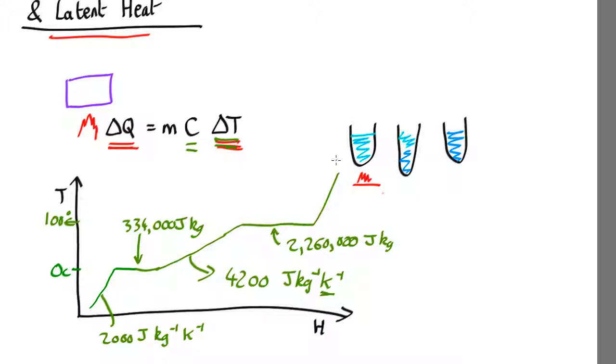So that's how it always works. If something's undergoing a phase change, you use the latent heat to work out how much energy is needed to convert it from liquid to solid, solid to gas, whatever it might be. If it's in between phase changes, then you use the specific heat capacity to work out how much energy is needed for a given change in temperature.